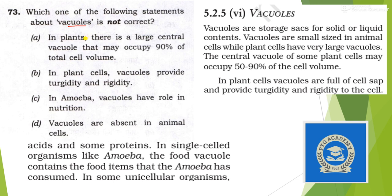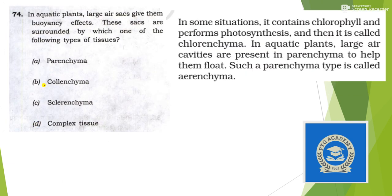Next: which statements about vacuoles are correct? In plant cells, a large central vacuole may occupy 50 to 90 percent of the cell volume — correct. Plant cell vacuoles provide turgidity and rigidity — correct. In amoeba, vacuoles have a role in nutrition — also correct. However, vacuoles are not absent in animal cells; they are simply smaller than in plant cells. So the incorrect statement is that vacuoles are absent in animal cells. Answer is option D.